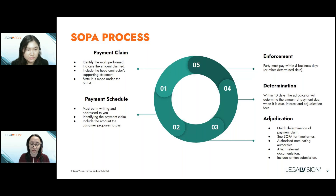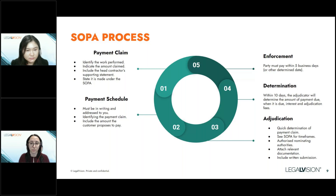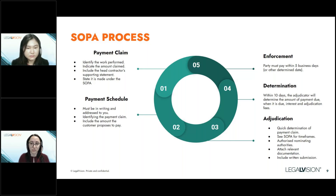The last and most important point is that a valid payment claim must state that it is made under the Act — as simple as including a sentence saying this is a payment claim made under the relevant security of payment legislation. Additionally, if a head contractor is making a payment claim, it needs to be accompanied by a supporting statement. Penalties apply if the supporting statement isn't provided, but it doesn't necessarily mean the payment claim is invalid. A supporting statement is an approved Fair Trading form in which the head contractor declares that to the best of their knowledge and belief, they've paid all subcontractors all amounts due and payable in relation to the construction work.